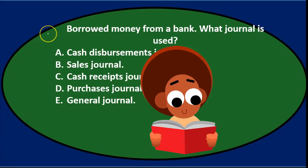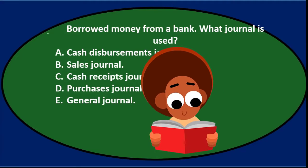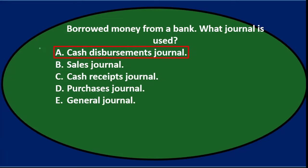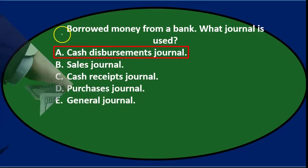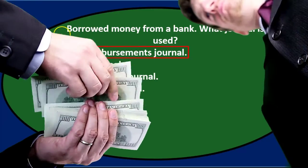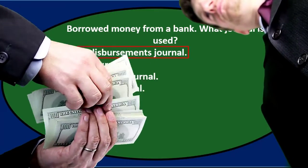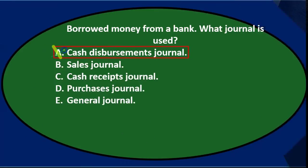Let's read through one more time and cross them out using the process of elimination. Borrowed money from a bank — what journal is used? A. Cash disbursements journal. That would be used if we were dispersing the cash, but if we borrowed money we would be getting cash typically, so it's not going to be the disbursement. We're probably receiving money in this transaction.